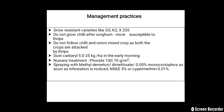Management practices: first, grow resistant varieties like G5, K2, X2, 35U. Do not grow chili after sorghum, which is more susceptible to thrips. Do not follow chili and onion as a mixed crop, as both crops are attacked by thrips.